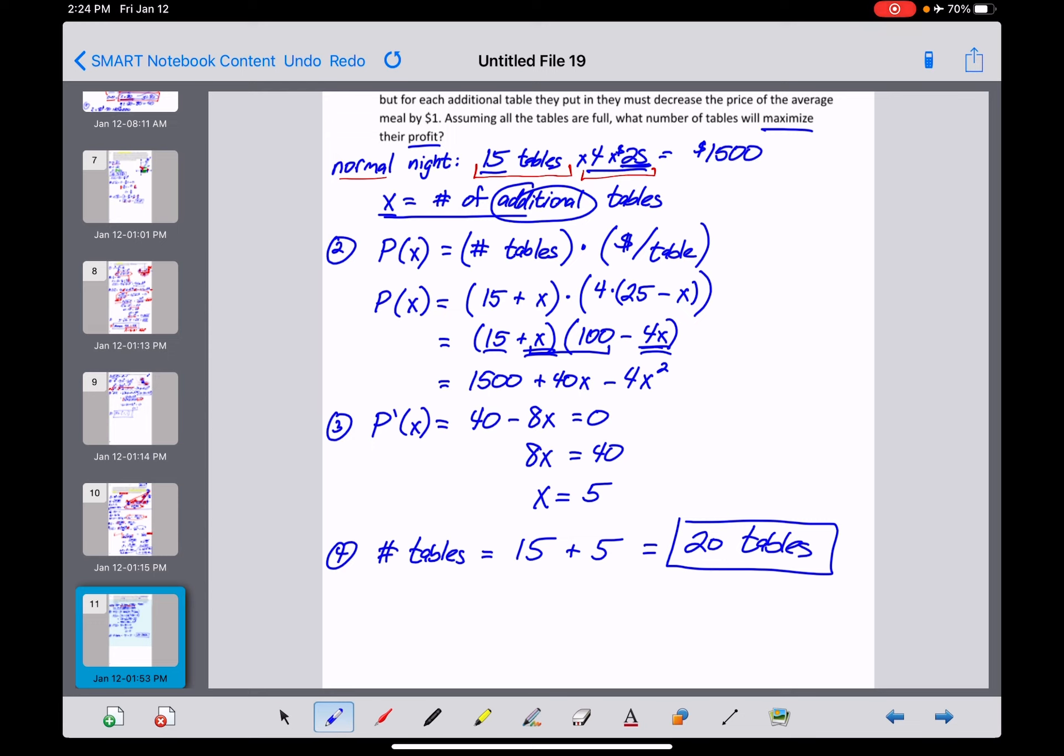So, if we wanted to check that real quick. By the way, I'm done. That should be the answer. But let's check this real quick. Profit, if we were to put out 5 additional tables, let's see what that would do. And I'd probably put that into this expression. 15 plus 5 means we're going to put out 20 tables that night. And then 100 minus 4 times 5. That means that we're going to make $80 per table on selling our meals. And here we end up with a profit on that night of $1,600. Which clearly is more than the $1,500 that we would make on a normal night.